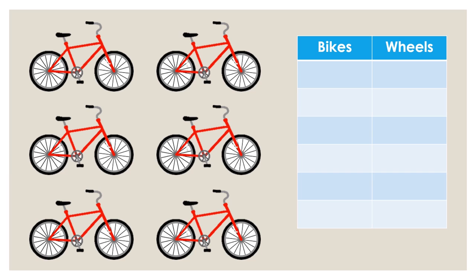Isn't counting fun? Each picture represents one bike, but it also represents two wheels at the same time.